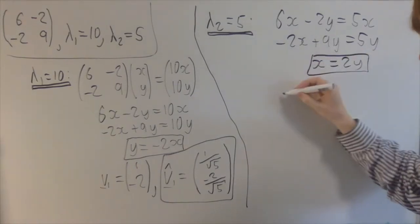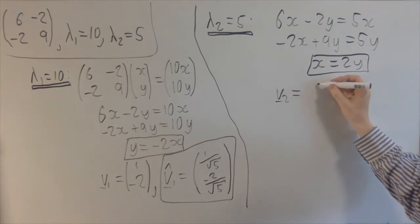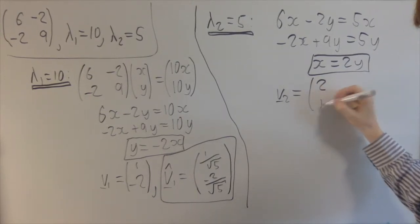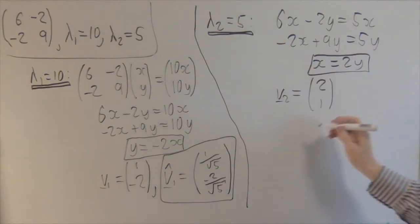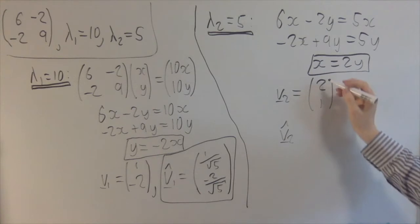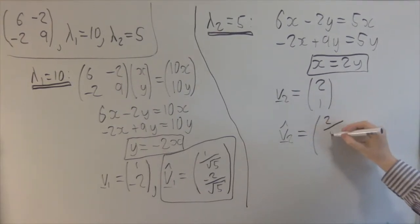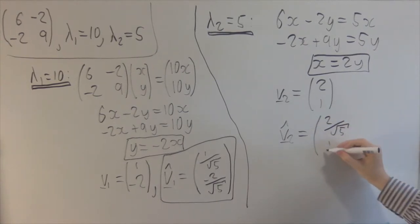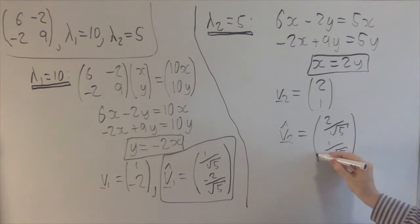Which tells you, you could take, for example, 2, 1 as your eigenvector. For this eigenvalue, but again, I want a unit eigenvector. So we divide by the magnitude, which is root 5 again. We get 2 over root 5, and 1 over root 5 as our second eigenvector.